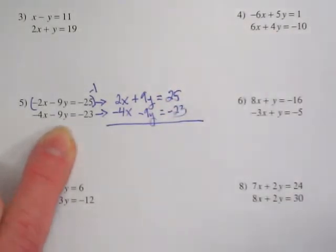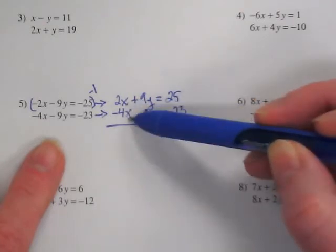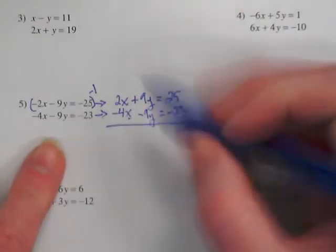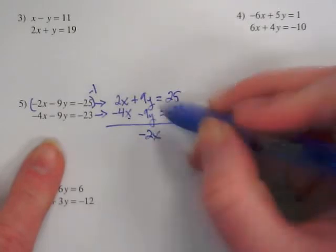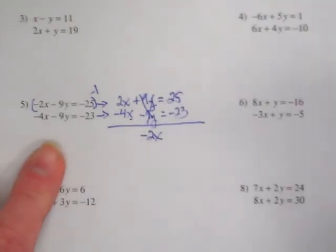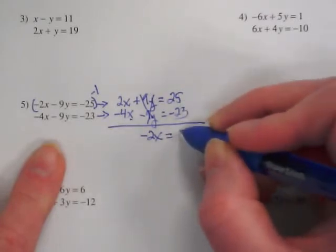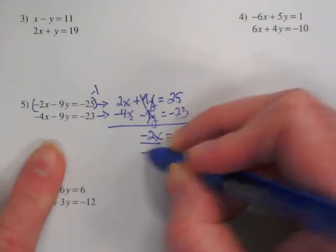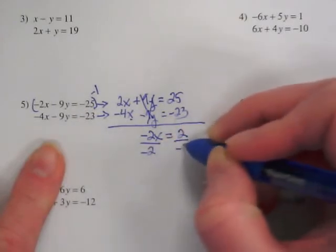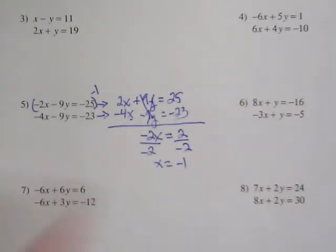And we are going to combine these. 2x and negative 4x leaves us with negative 2x. 9y minus 9y, zeros out and is eliminated. And 5 minus 23 is 2. And we have another negative 1, don't we?